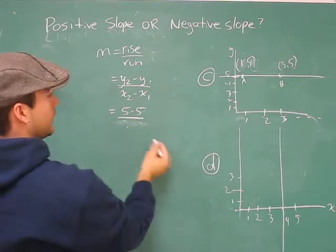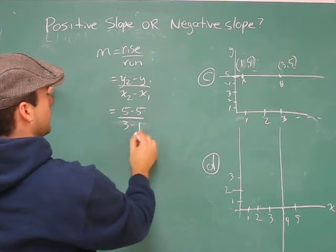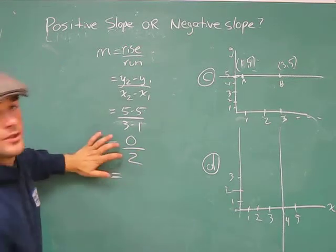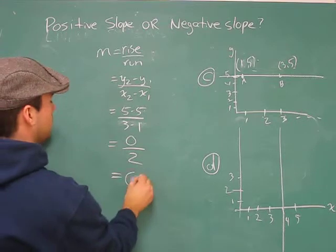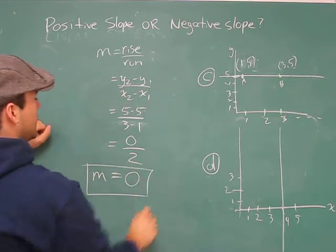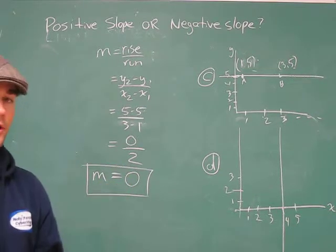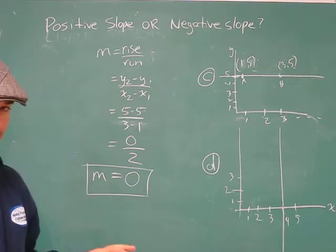Regardless, you're going to get a number that is 0 over top of something. Well, 0 over top of something is 0. So what this says is slope is 0, i.e. if you're on your snowboard, you ain't going anywhere. You're just stuck.